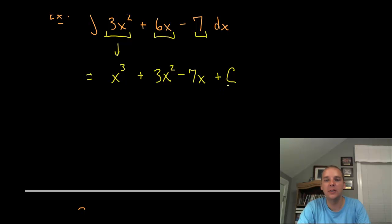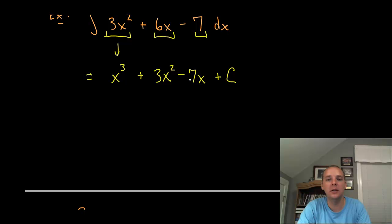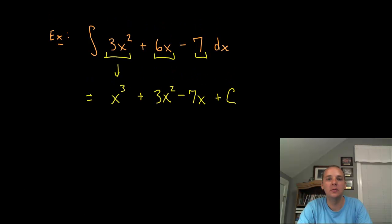So this whole expression is the antiderivative of 3x² plus 6x minus 7. Something that could have been very difficult if the rule wasn't that simple actually wound up being quite easy, just because we could break it up into each individual term, which made it a lot easier.